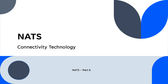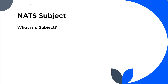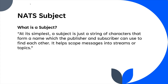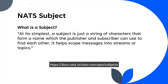Hello, good day, welcome back. Today we're going to be looking at how you name subjects in NATS. There's a pattern to how you can name things and there are some characters that you can use that have special meaning. From the NATS documentation: at its simplest, a subject is just a string of characters that form a name which the publisher and subscriber can use to find each other.